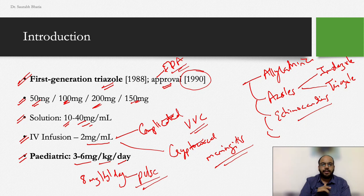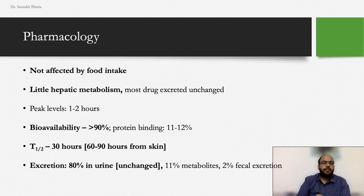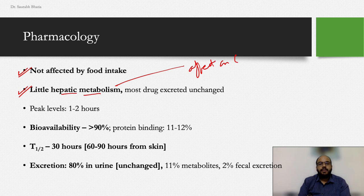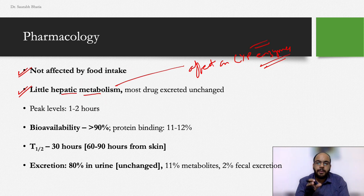When using fluconazole pulse, the dose increases to about 8 mg/kg/day; otherwise the pediatric dose is 3–6 mg/kg/day. Fluconazole absorption is not affected by food intake, making it easy to use in pediatric populations. It undergoes little hepatic metabolism, so in cases of liver enzyme derangement, fluconazole becomes a good antifungal option. Its effect on the CYP family of enzymes is minimal — less than with itraconazole.